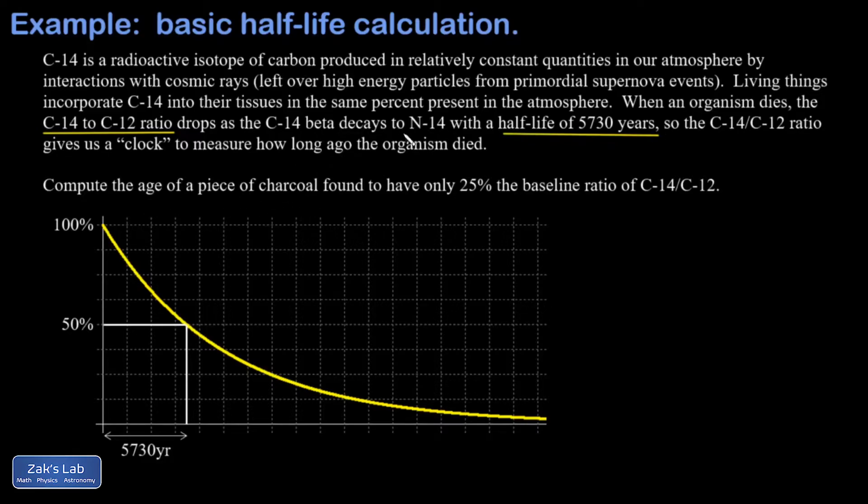So in our problem we're just told that we found a piece of charcoal, maybe from an archaeological site, and it only has about 25% of the original ratio of C-14 to C-12. So these are nice round numbers and we're not getting into the mathematics of exponential decay except that you need to understand what half-life means.